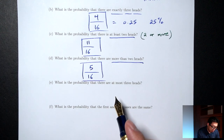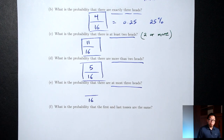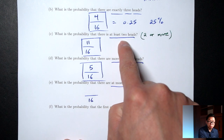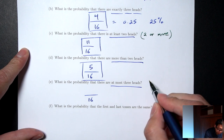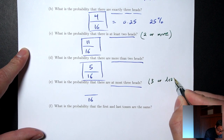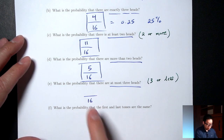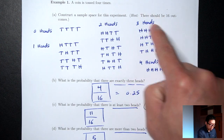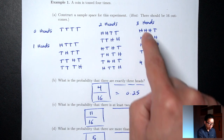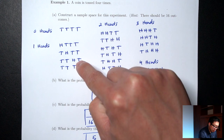Part E: what's the probability that there are at most three heads? Bottom is 16. 'At most three' means three or less. Pay attention to those keywords — at least and at most — you'll see those a lot in this unit. Three or less includes all the threes, twos, ones, and zeros: 4 + 6 + 4 + 1 = 15 outcomes. Probability is 15/16.